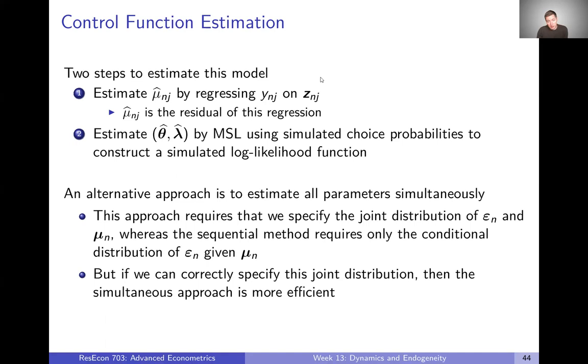There is an alternative approach we could take here, kind of like with the GMM version of BLP. Instead of estimating this in two steps, we can estimate it simultaneously in one step. But that's going to require that instead of specifying a conditional distribution of epsilon, we need to specify the joint distribution of epsilon and mu. So we have to make a stronger assumption there. But if we can correctly specify that joint distribution, then we can simultaneously estimate this entire model.